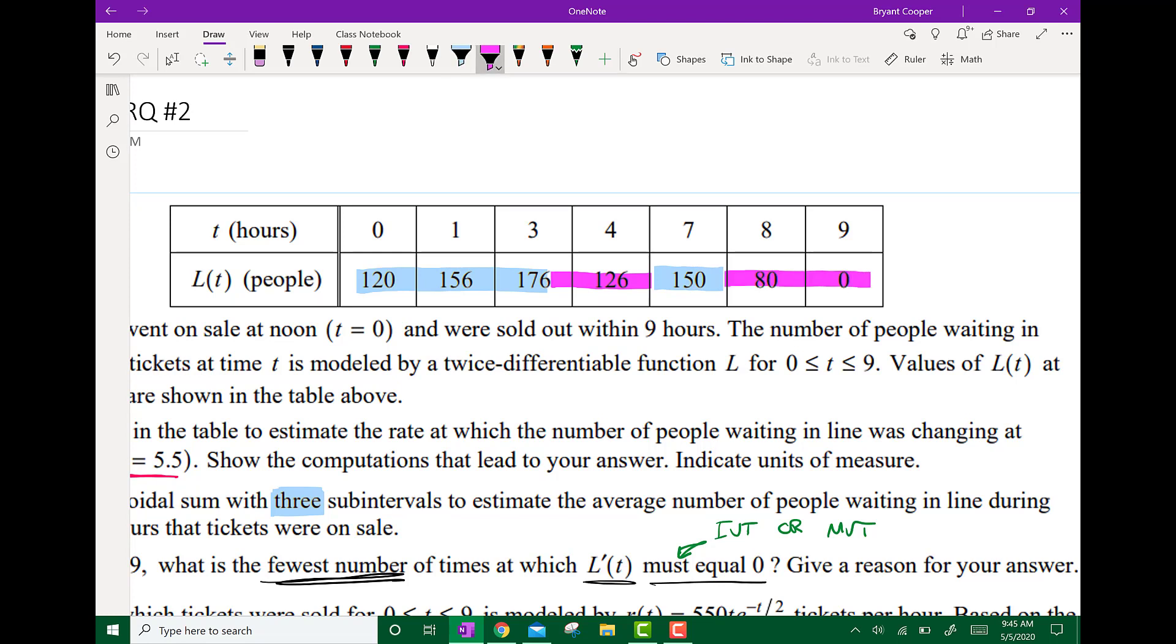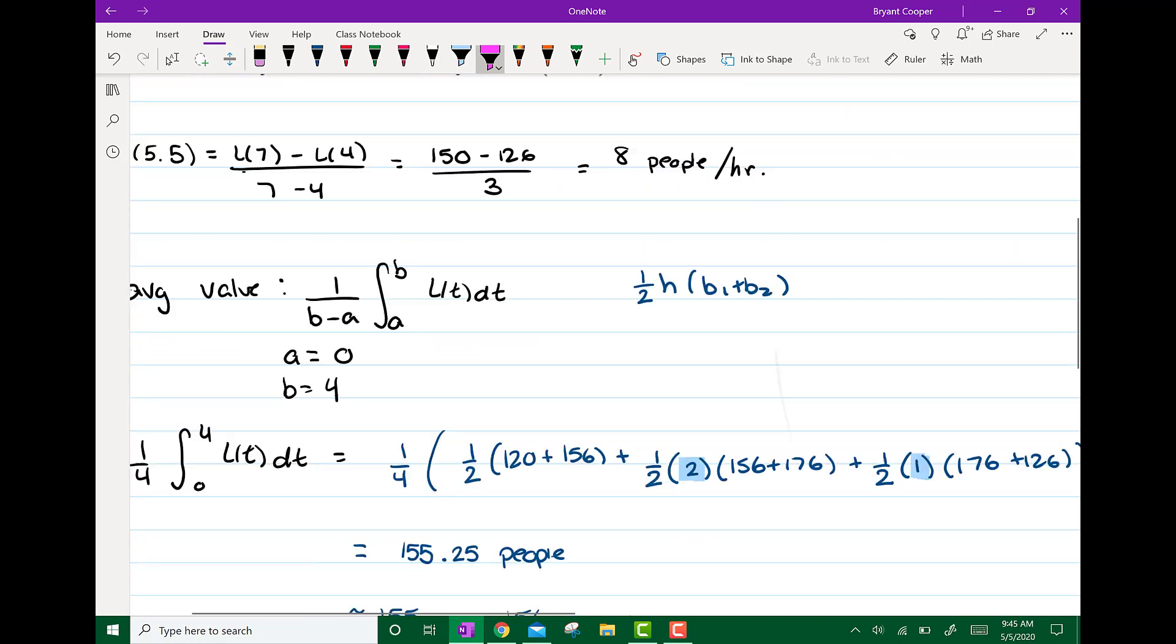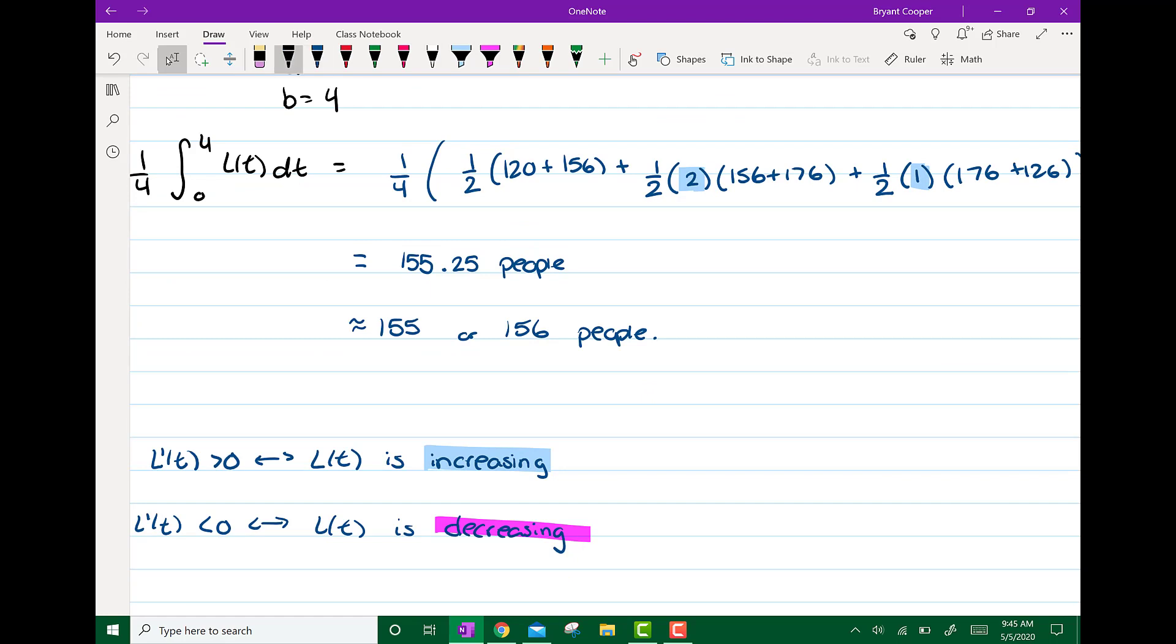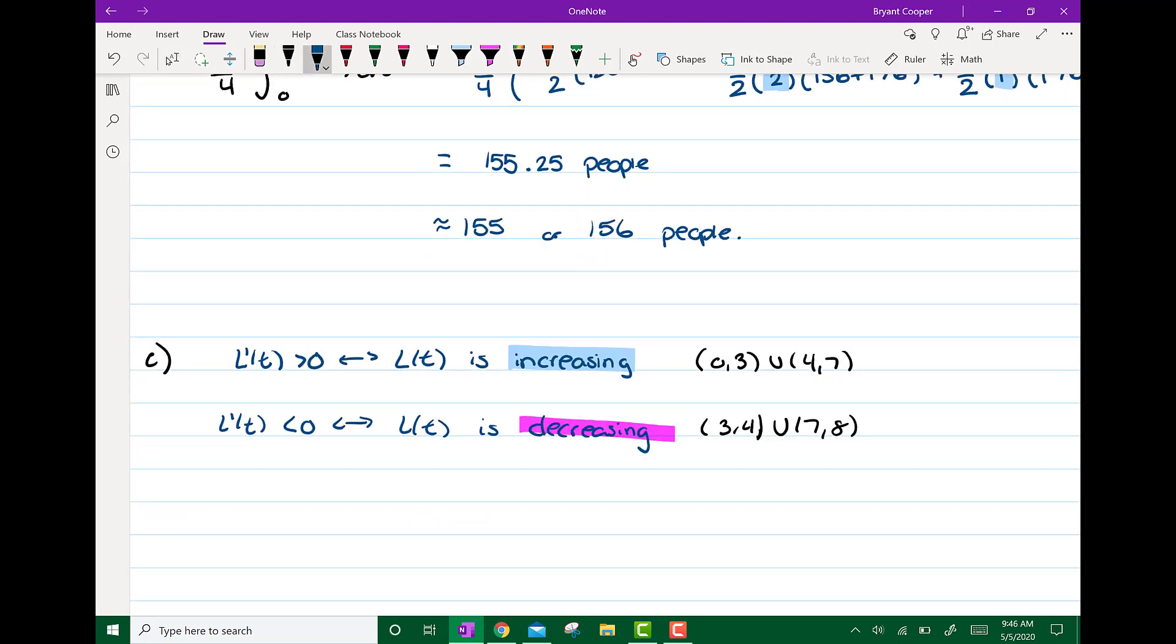It could increase and decrease more in there, but I don't know. This is what I know for sure. So I know that it's increasing from 0 to 3 and 4 to 7, and I know that it's decreasing from 3 to 4 and 7 to 8. So if the function goes from increasing to decreasing, then the derivative is 0. Or if it goes from decreasing to increasing, the derivative is 0.